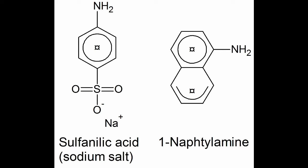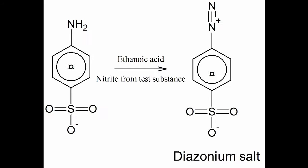First, here are the formulas for the two reactants, sulfonylac acid and 1-naphthalamine. The sulfonylac acid is derived from aniline by sulfonation. The 1-naphthalamine is prepared from naphthalene by first nitrating and then reducing the nitro group to an amine.